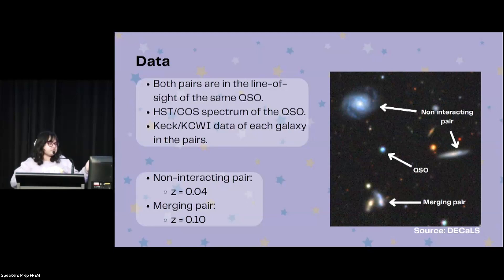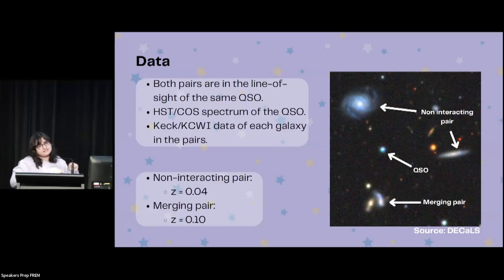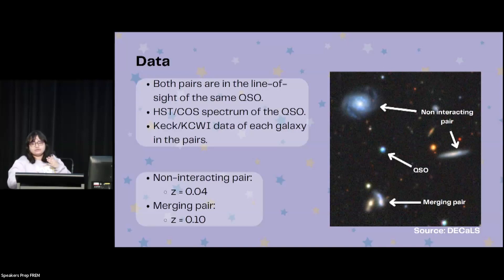I also have KCWI data of each of the galaxies in the pairs. Another important detail is that both of these galaxy pairs are at different redshifts, which means that the absorption lines do not overlap in the spectrum of the quasar.